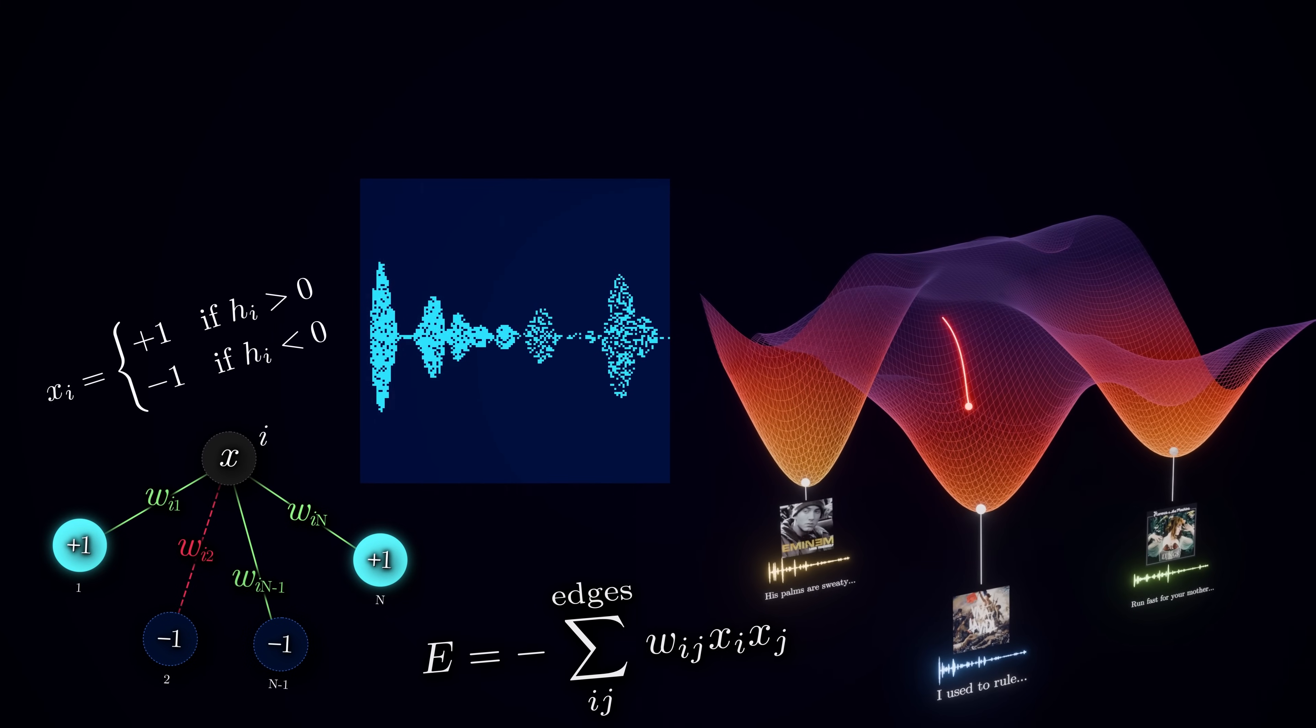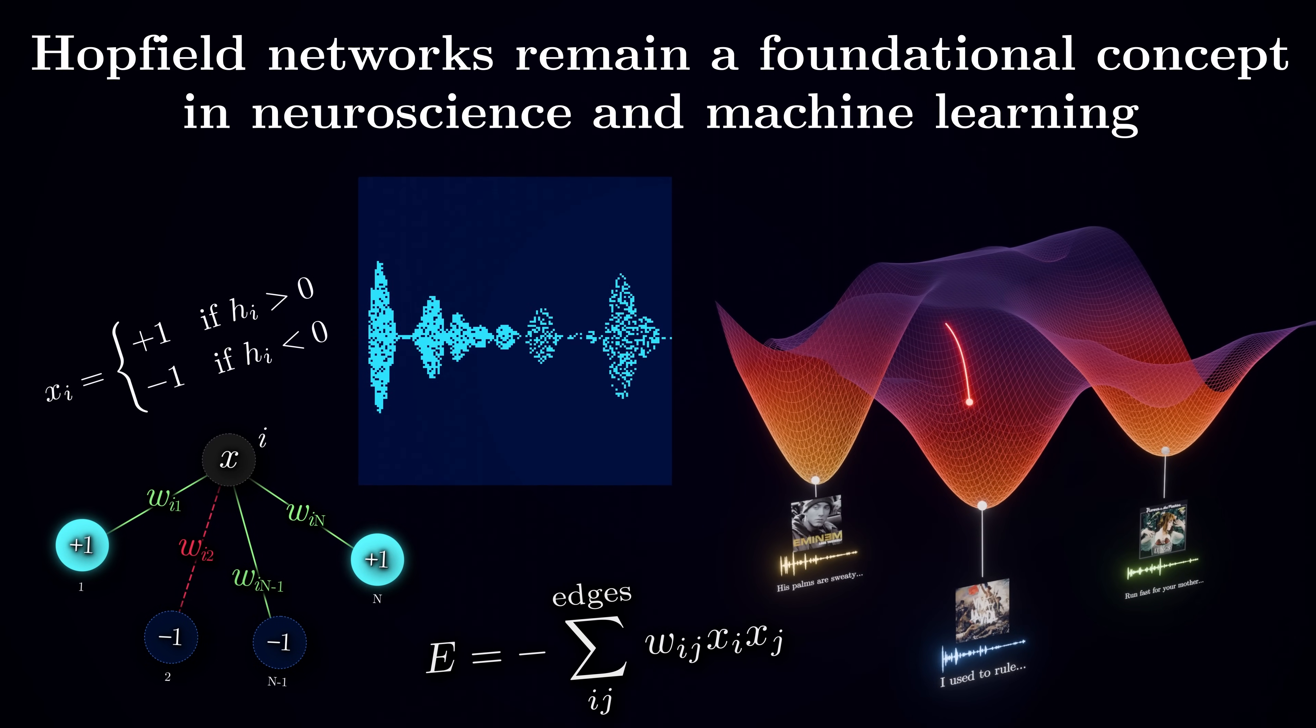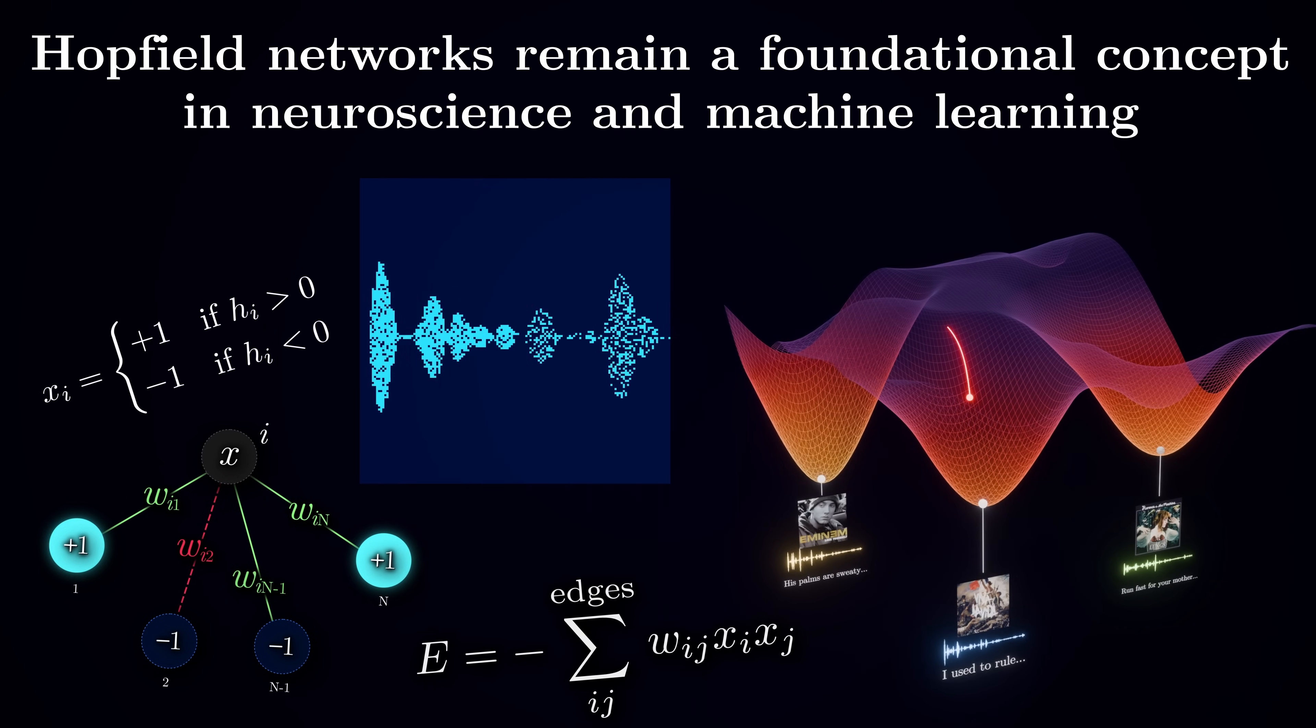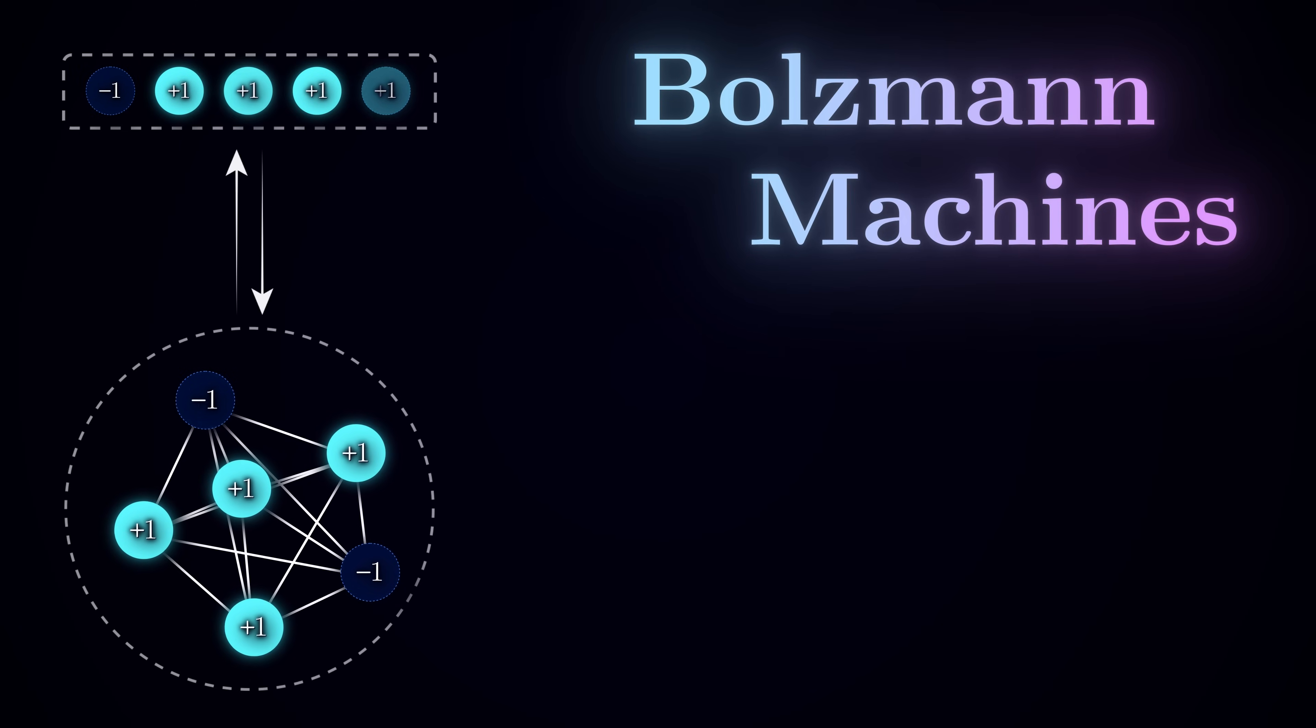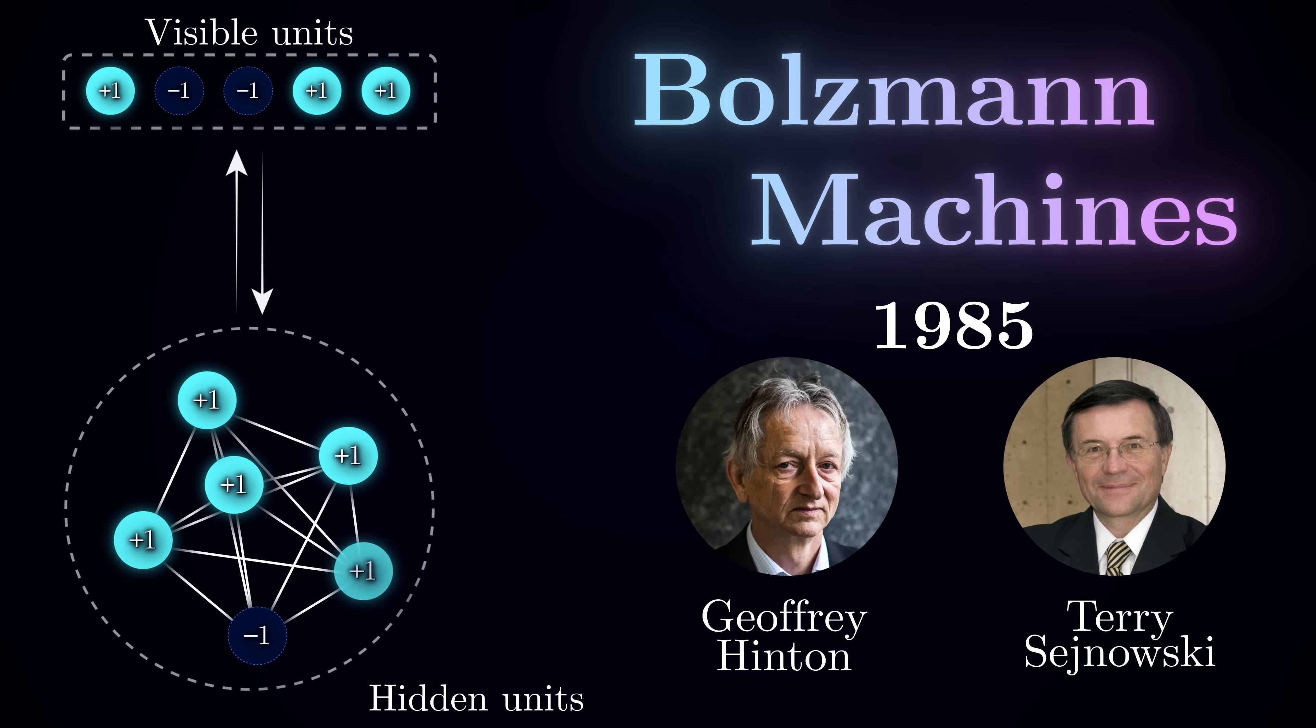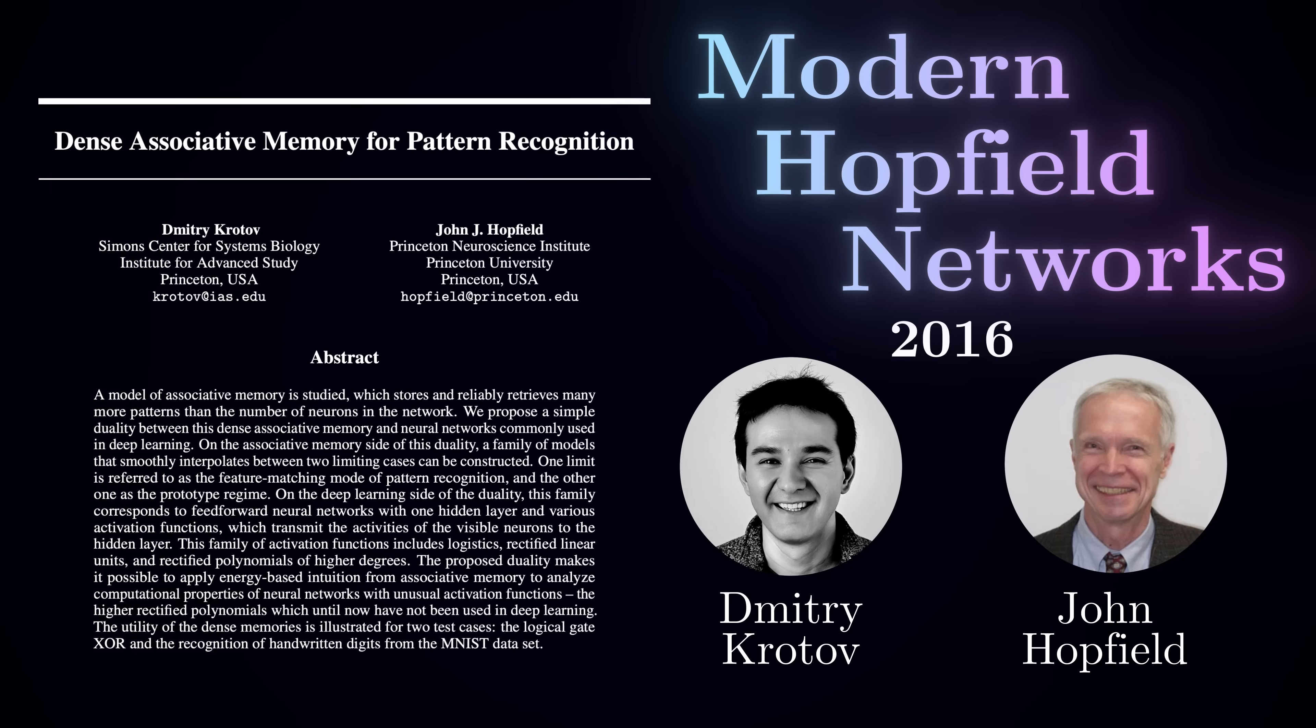All of this makes vanilla Hopfield networks not useful for practical purposes. However, to this day, they provide a powerful and intuitive model of associative memory, a simple network of neuron-like units that can store and retrieve patterns through pure local learning and inference rules. Despite their limitations, Hopfield networks have laid the groundwork for more advanced energy-based models. In one of the next videos, we will look at the extension of the Hopfield networks known as Boltzmann machines. These generative architectures introduce additional hidden units and stochastic dynamics, allowing them to learn more complex probability distributions. There is also an extension to modern Hopfield networks, published in 2016 with John Hopfield himself as one of the authors, but that's a topic for another time.